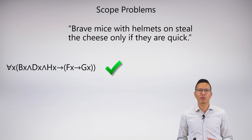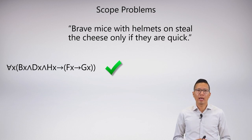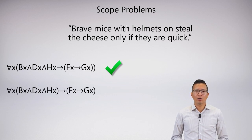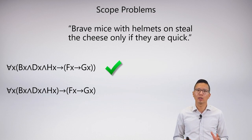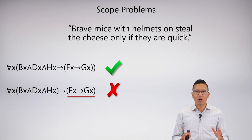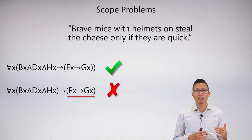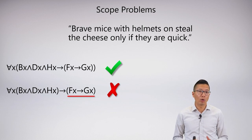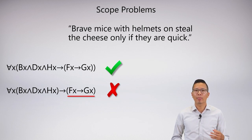Now that we've looked at some straightforward symbolizations, we can talk about the importance of scope and what a scope problem is. You want to know this to avoid scope problems when you symbolize. Here's a correct solution, and here's an example of a scope problem. The thing that's wrong is that the tail end — FX → GX — is not under the scope of the quantifier 'for all X.' The scope of that quantifier is actually just the antecedent BX ∧ DX ∧ HX, and nothing binds the variable in the consequent. So that thing isn't a sentence — it can't have any meaning or truth value.